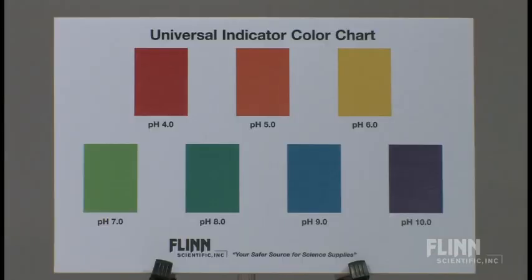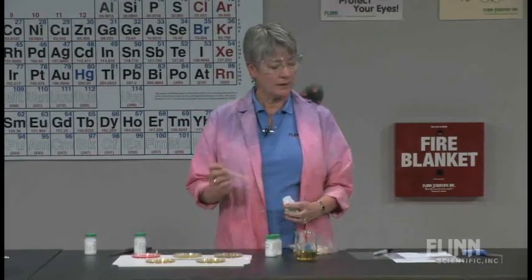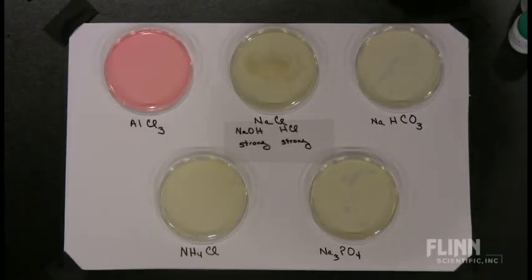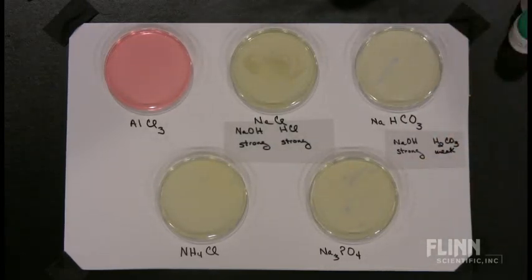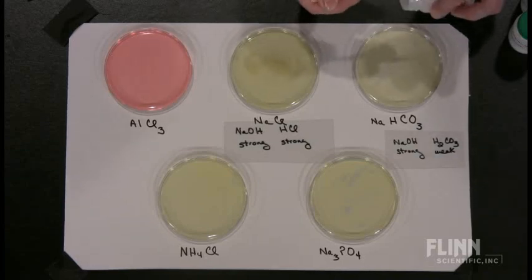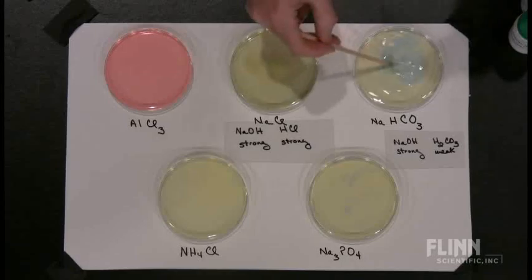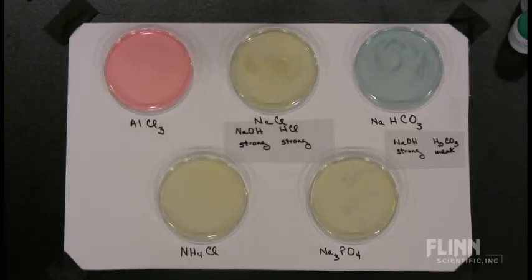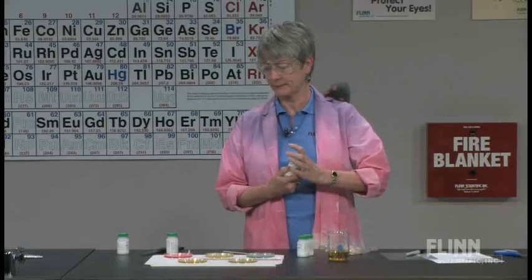How about sodium bicarbonate? Figure out the parent acid and the parent base, and then let's see if it matches our predictions. We're going to have sodium hydroxide and carbonic acid. And they can look on the chart and see that the blue color is basic. So baking soda is slightly basic.